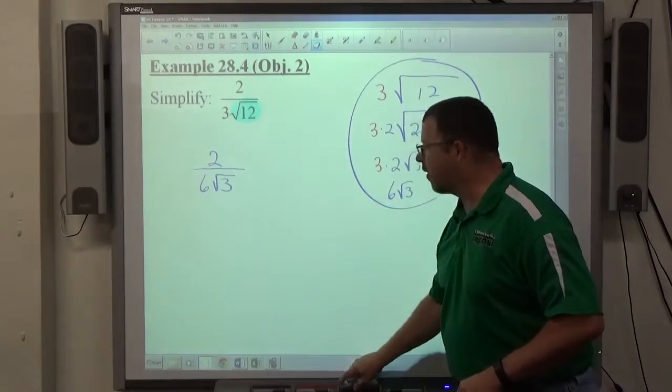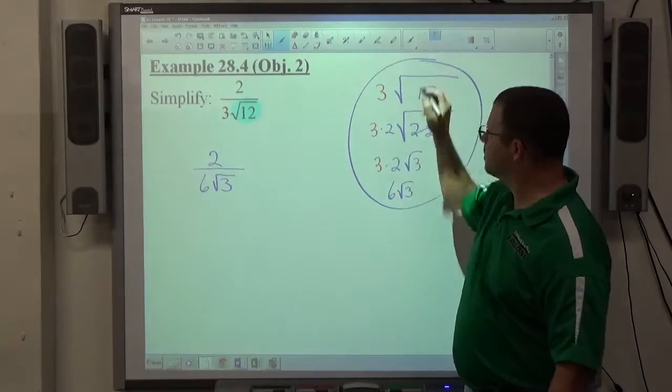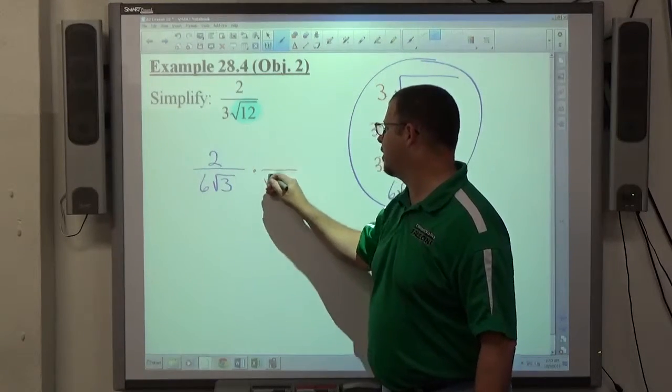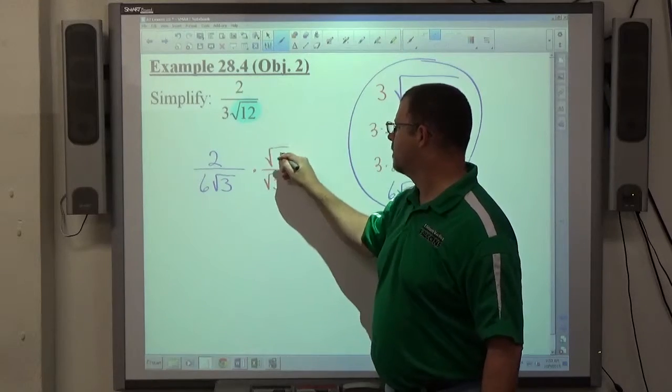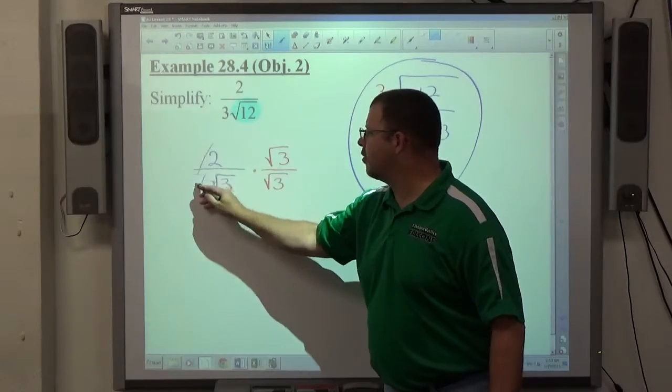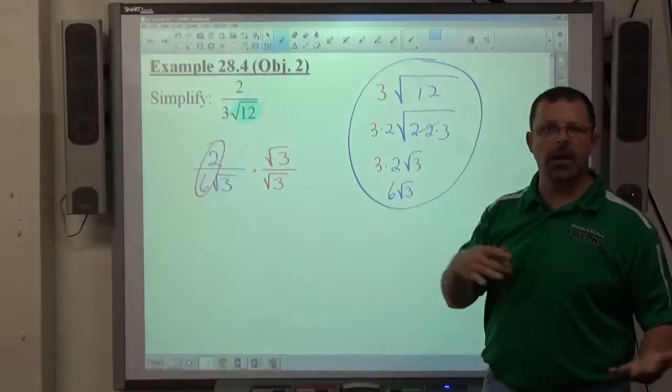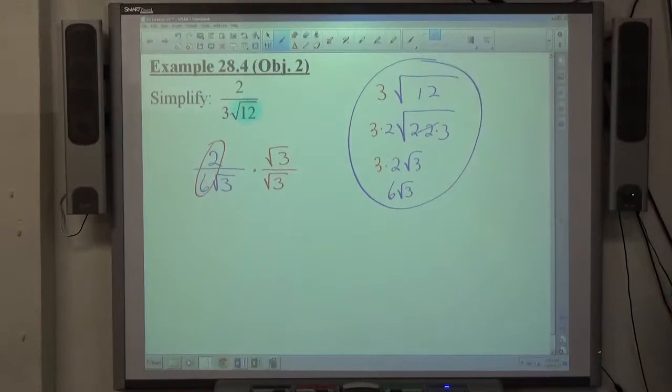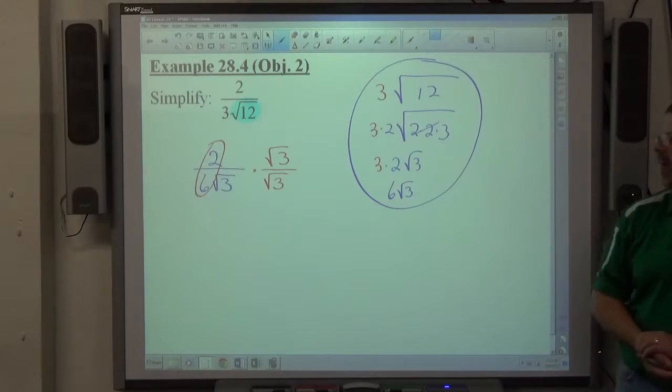Then, we've got the same problem we had in the last one. We have a square root of 3 on the bottom, we don't want a square root of 3 on the bottom, so multiplying by the square root of 3 is going to fix that issue. You may notice that these reduce. You can do that now or later, it doesn't matter when you do it. I'm going to wait, but 2 over 6 would reduce to 1 over 3. Let's just hang on to that for a minute.